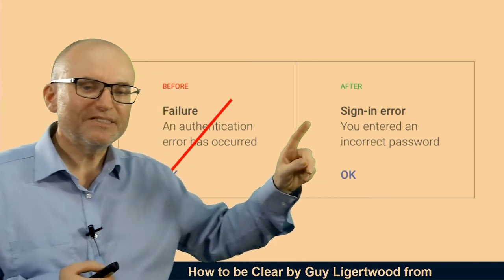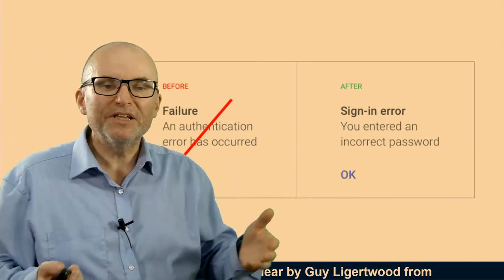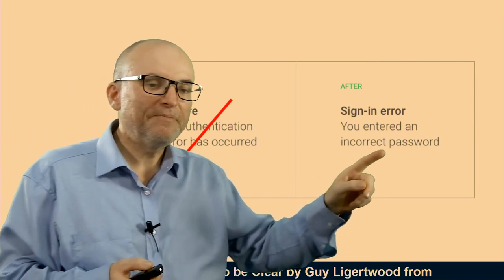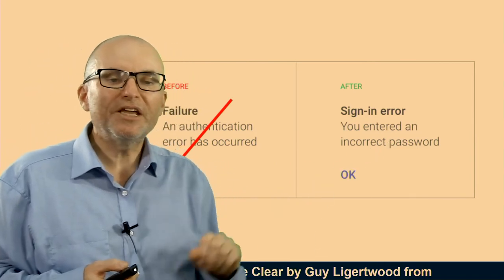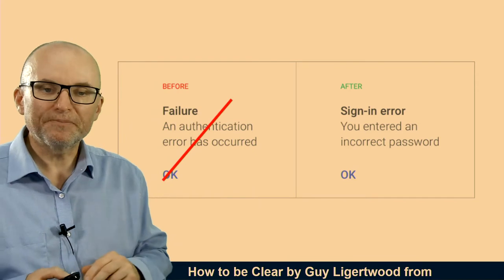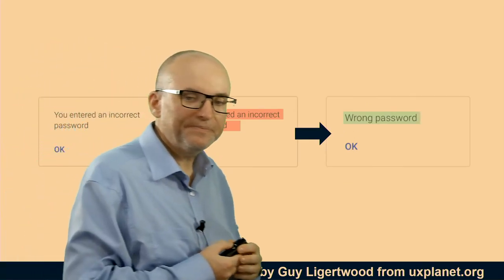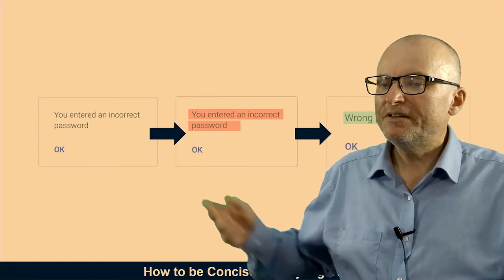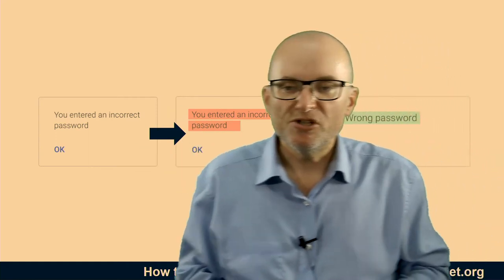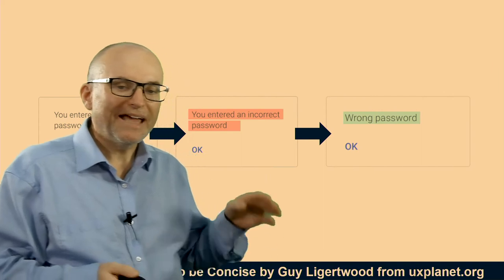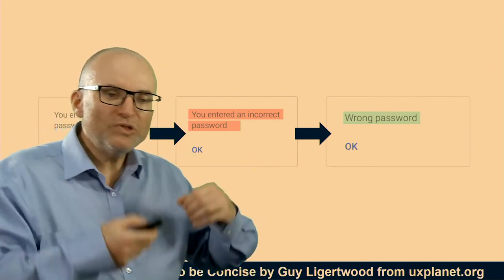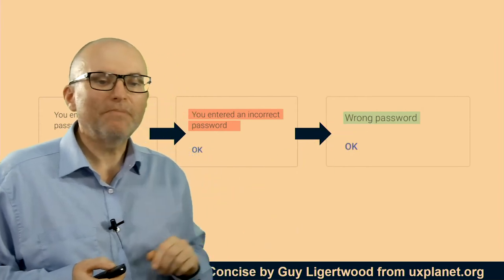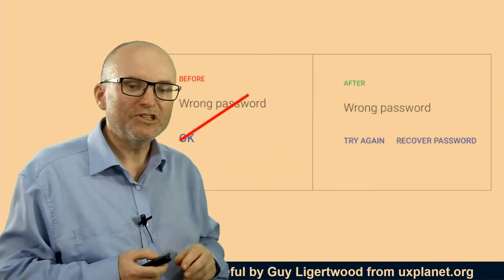You can replace it with 'sign-in error,' which explains better what it is — a more relevant phrase. Then it says 'you entered an incorrect password,' so you're speaking directly to the person. You can also simplify further by removing a few words — you lose some direction, but you make it easier to read — so you could say simply 'wrong password.'